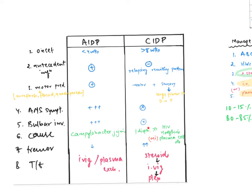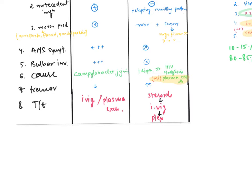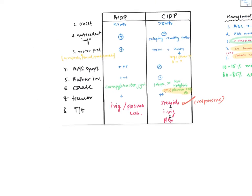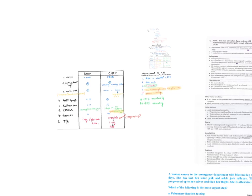Next is tremors. In acute there are no tremors, but in chronic we see tremors most commonly. Regarding treatment, in acute we use IVIG or plasma exchange. In chronic, steroids are unresponsive in acute cases but responsive in chronic. So steroids are responsive in CIDP. We also use IVIG or plasma exchange.